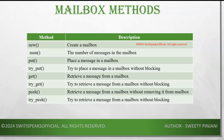get will retrieve a message from the mailbox. try_get will try to retrieve a message and won't block the processes after it. peek will retrieve the message from the mailbox but without removing it — the message will still exist in the mailbox. try_peek will try to retrieve the message from the mailbox without removing it and without blocking further processes. These are the different methods present in the mailbox.